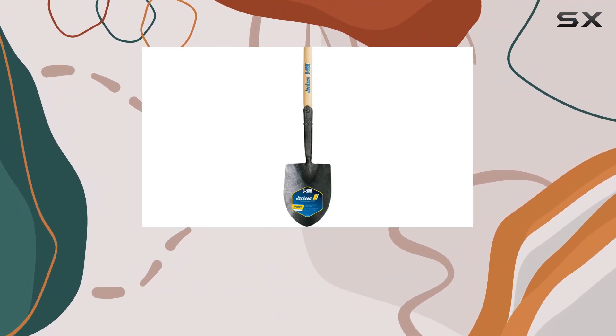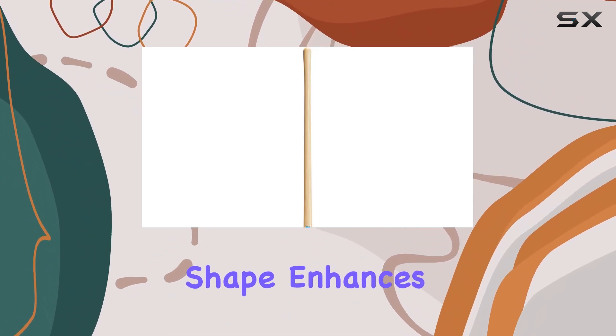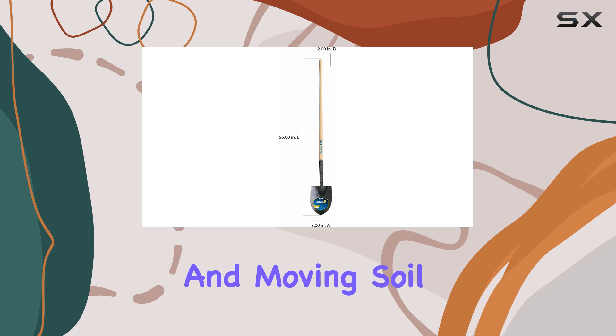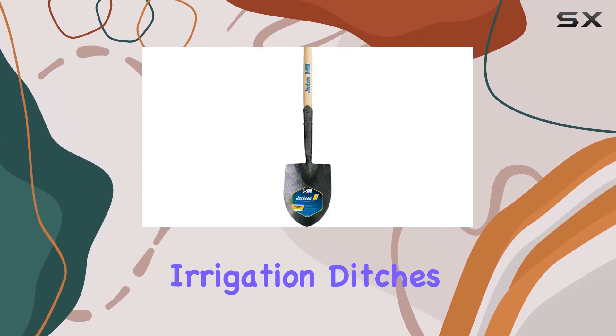Ensuring it can withstand the rigors of demanding jobs, the blade's round point shape enhances its effectiveness in penetrating and moving soil, making it a reliable choice for clearing and digging irrigation ditches.